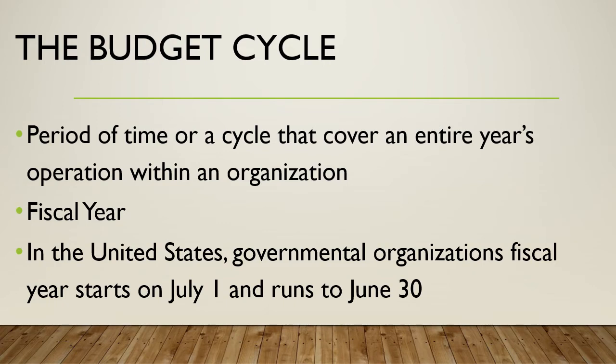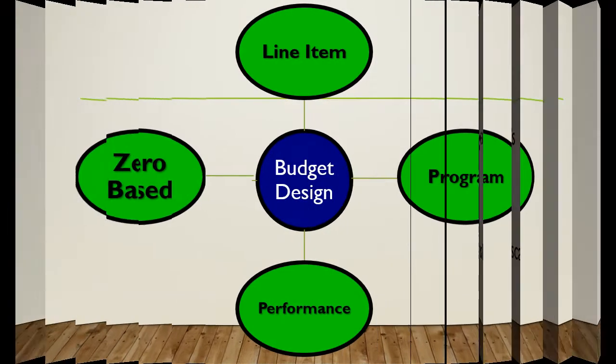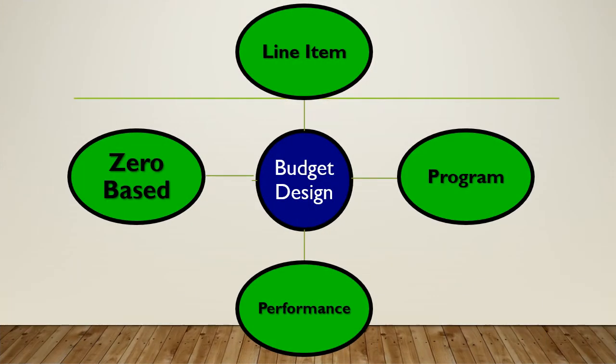The budget cycle covers an entire year of operation — we call this a fiscal year. For example, some fiscal years are January 1 to December 31. Others, like the United States government, run July 1 to June 30. These can be different among organizations. We're going to briefly talk about four different types of budgets: the zero-based budget, the line-item budget, the program budget, and the performance-based budget.